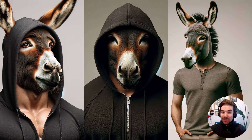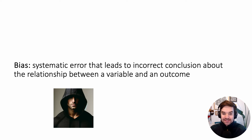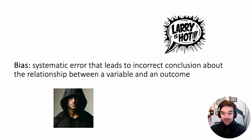half donkey. What happened here? Well, you got a biased sample of photos. The formal definition of bias is: a systematic error that leads to an incorrect association or conclusion about the relationship between some variable and some outcome. In this case, the variable — the data — was the photo of Larry. The conclusion was, 'Larry's hot.' And the outcome: you swiped right.